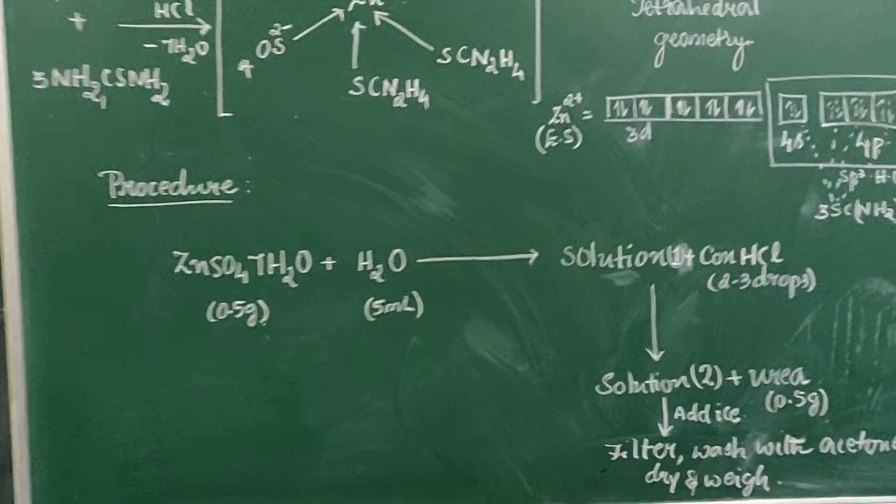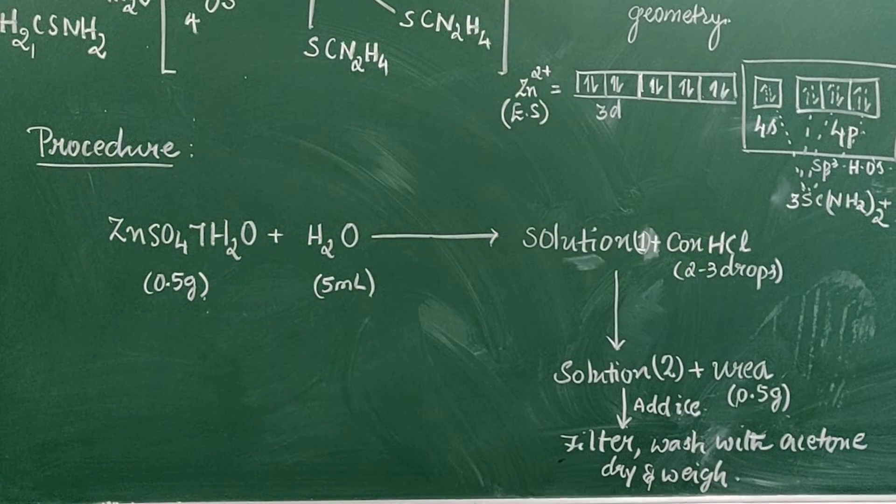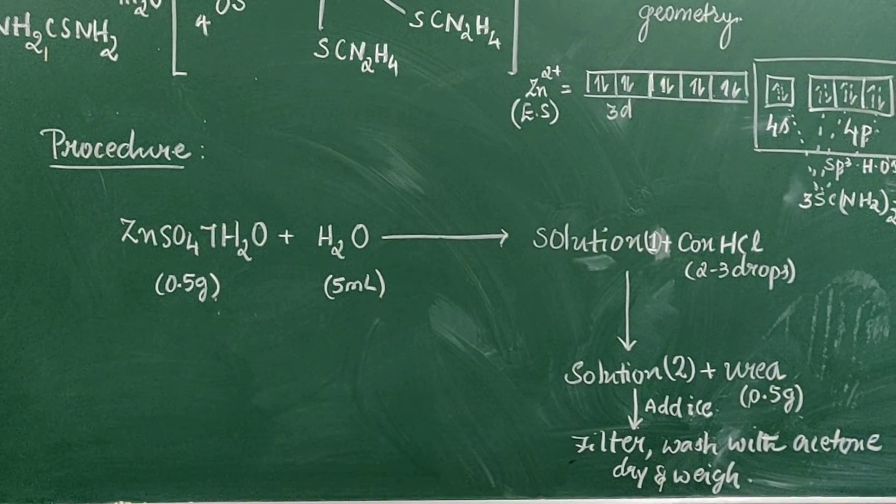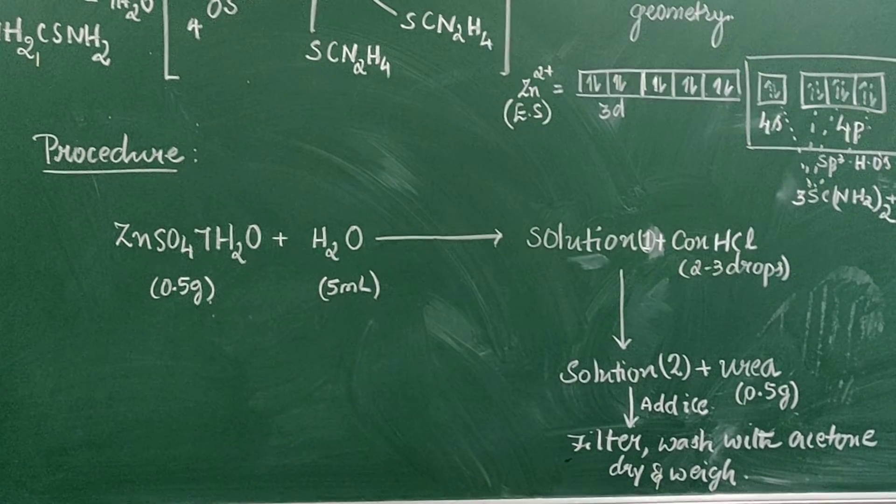Coming to the procedure of this experiment, weigh 0.5 grams of zinc sulfate heptahydrate. To this add 5 ml of water - we get a solution.